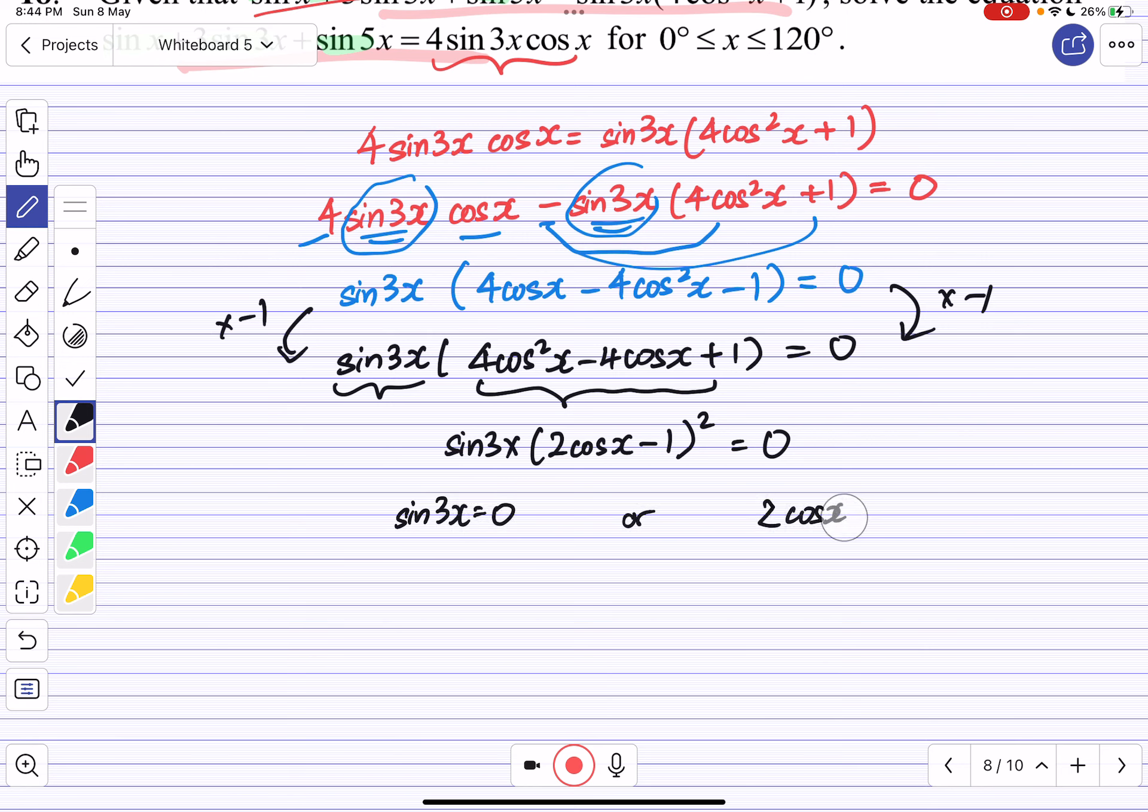From 2cos x - 1 = 0, we get cos x = 1/2.